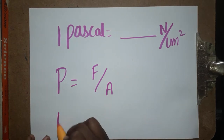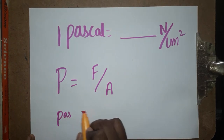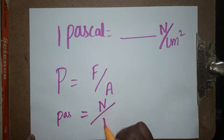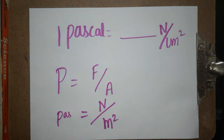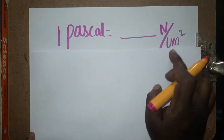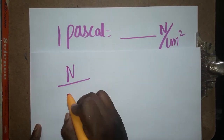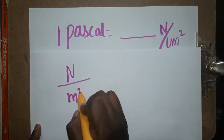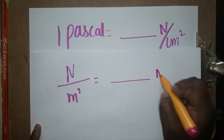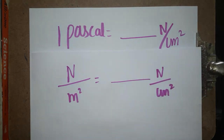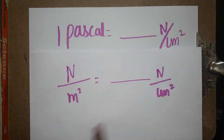The unit of pressure is pascal. Force unit is newton, and area unit is length into breadth — meter square. We are going to convert pascal, which is newton per meter square, to newton per centimeter square. That is the actual conversion we are going to see.